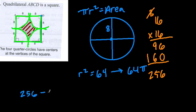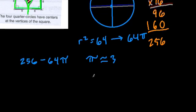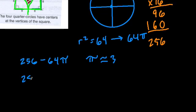So we can just write that right here, 256 minus 64 pi. Now, if you're leaving your answer in terms of pi, you're done here. If you're estimating pi to some value, let's say we say pi is about 3, then what we do is just plug that in.